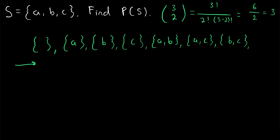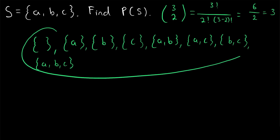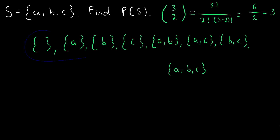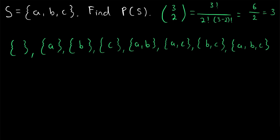Now we'll write all of the subsets that have three elements. The only subset of S that contains three elements is S itself, since those are all the elements of S. How many subsets should we have total? S has two to the power of its cardinality subsets — that's two to the power of three, which is eight. We count one through eight, and that looks good. We can go ahead and close our power set. That is the power set of S.